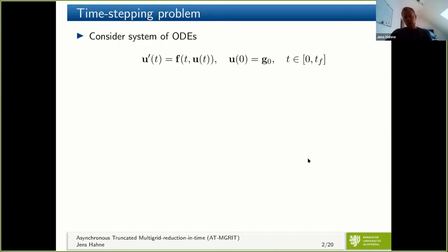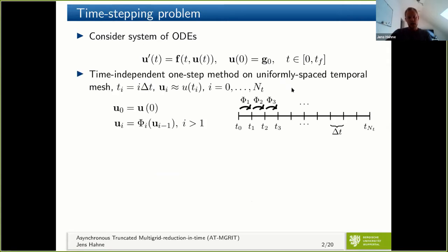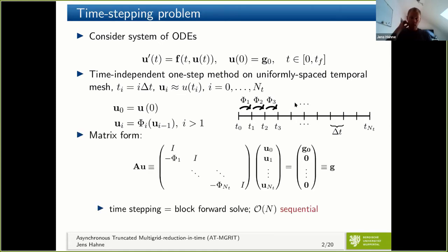The problem we want to solve is an initial value problem. We discretize it using a one-step method, giving us a time integrator phi that takes a solution at point i minus one and propagates it to point i, stepping over time. This can be rewritten in matrix form as a nicely structured matrix solved by a block-forward solve, but the problem is this block-forward solve is completely sequential in time — so we want to use parallel-in-time methods.